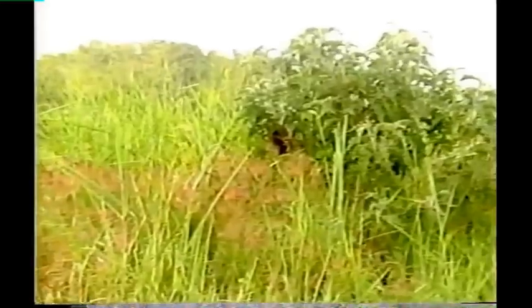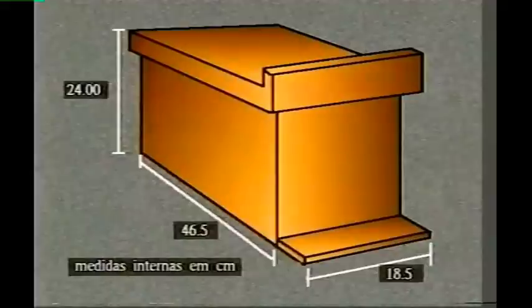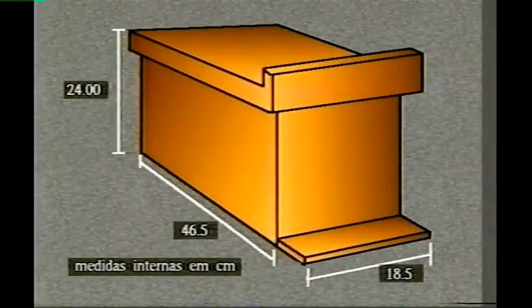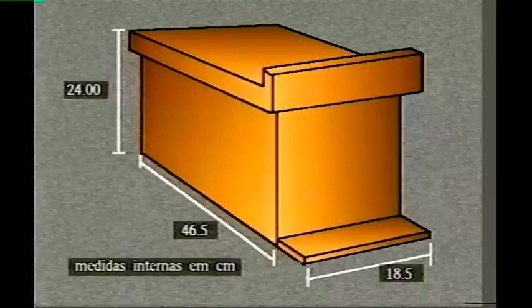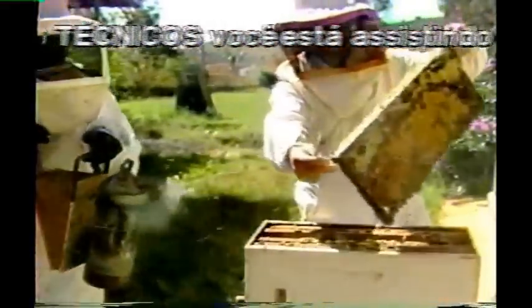Vem um novo dia e lá está o apicultor em busca de abelhas — desta vez, um enxame voador em plena migração, preso a um ramo de arbusto. Antes de iniciar a captura, vamos conhecer o núcleo: uma caixa um pouco diferente da Langstroth, com o mesmo comprimento e altura da base, usando os mesmos quadros, mas com largura menor. A diferença ocorre porque os enxames são menos populosos, ocupando menos espaço. Numa primeira fase, trabalham para se fortalecer e somente depois serão transferidos para colmeias normais. No caso de enxames em plena migração, a defensividade é menor, pois as operárias estão com seus papos cheios de mel como reserva alimentar, evitando o ataque.